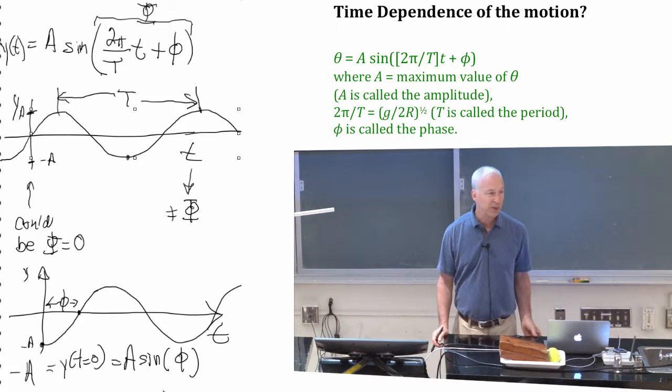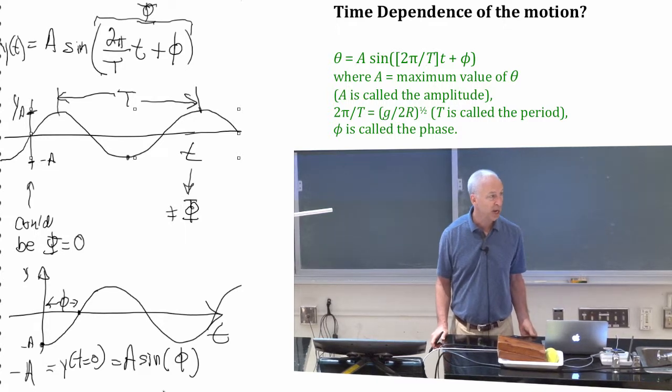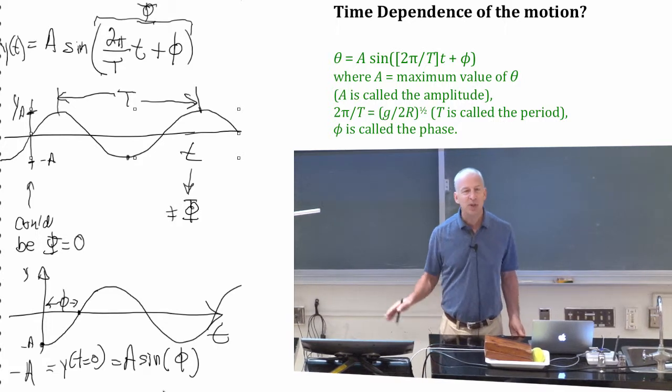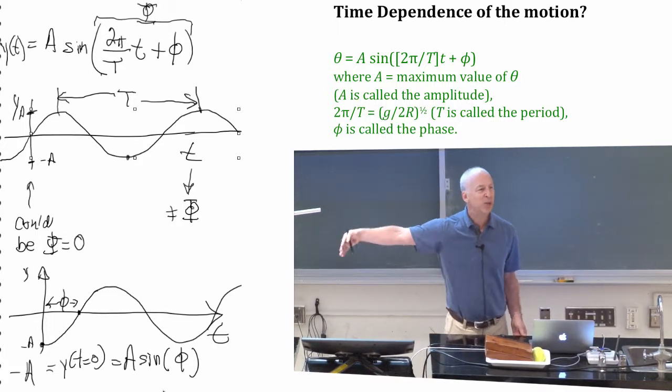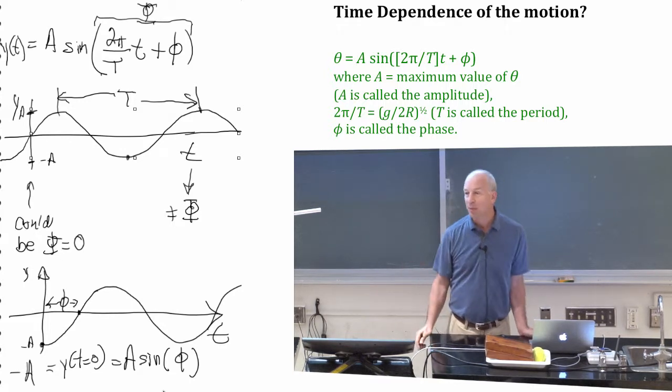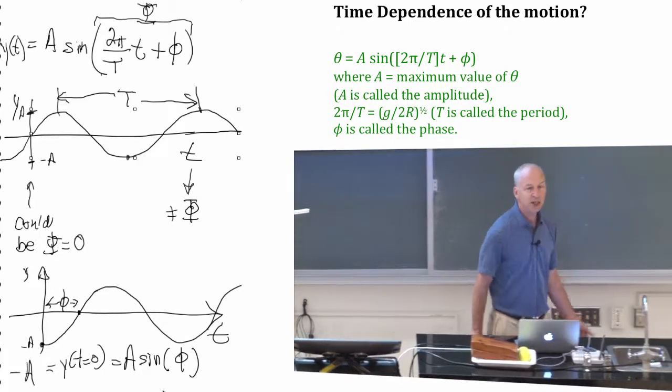Now there's a problem with phi. And that is that three pi over two is just as good an answer as minus pi over two. In fact, minus pi over two works, but so does everything else if you add two pi, a multiple of two pi to it. So phi is ill-determined because you can always add a multiple of two pi to it and not change anything.